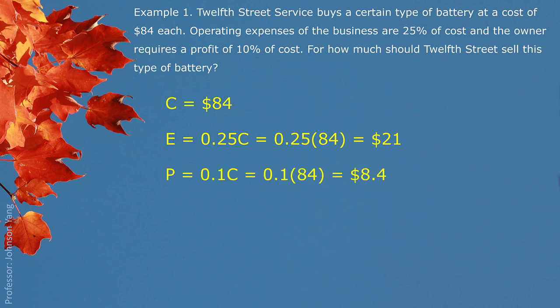Then we have expected 10% of the cost as profit. We have this calculation finished. The profit would be expected as $8.40. We put them together would give us the selling price should be $113.40.